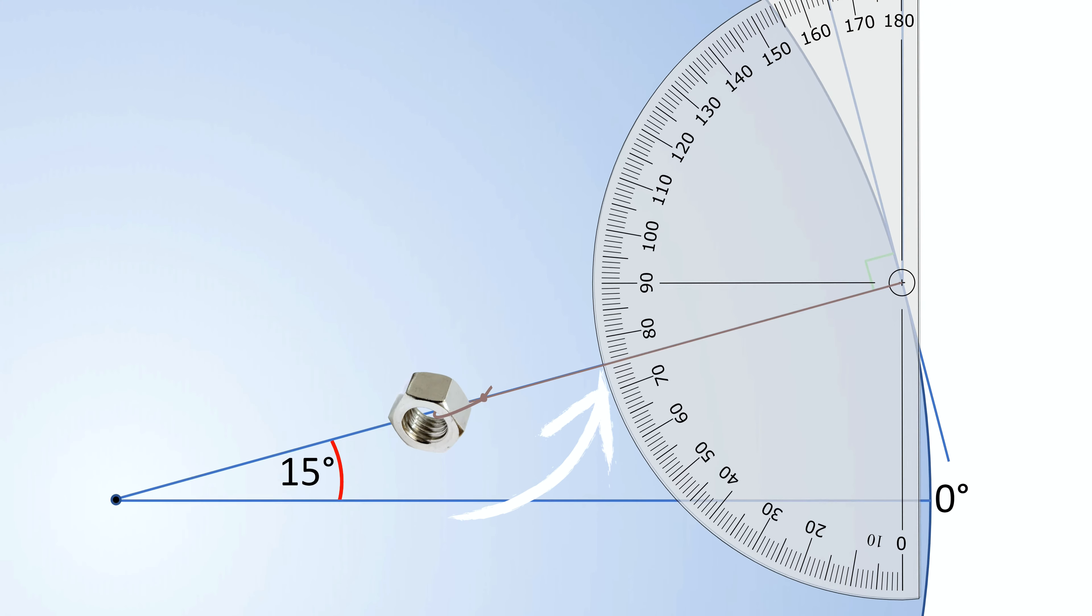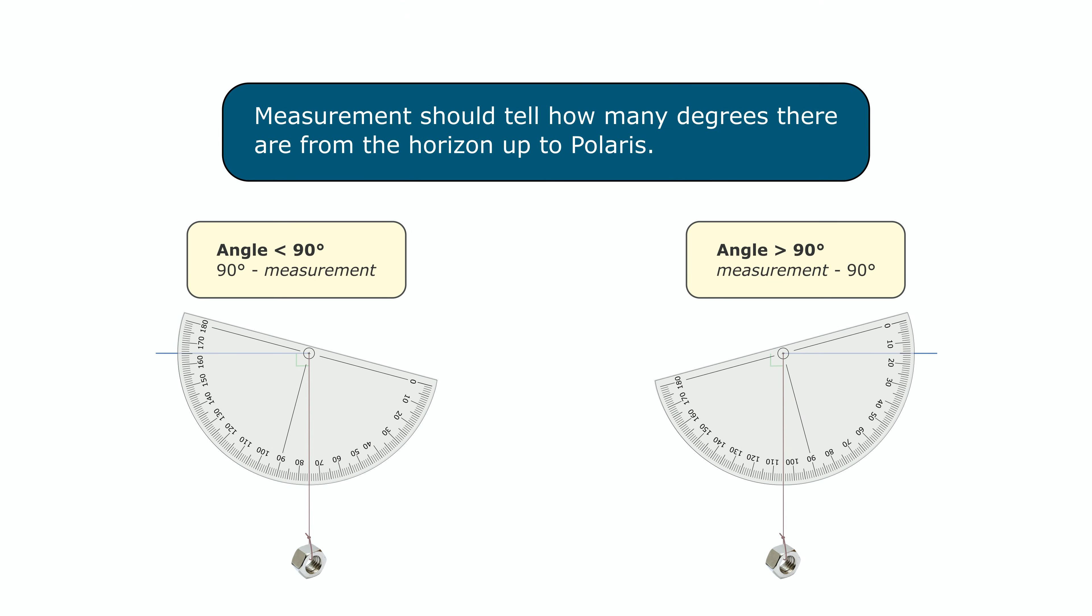In this case it's 75 degrees, so the angle up to Polaris in this case is 90 minus 75, which is 15 degrees. You want to map your reading, so it tells you how many degrees there is from the horizon up to Polaris, where 0 means no angle and 90 means 100% vertical.